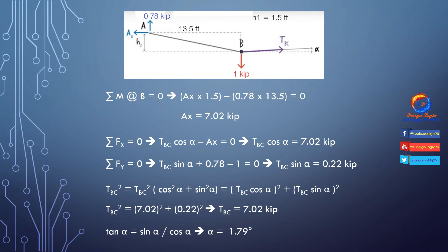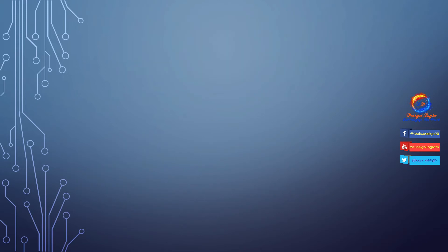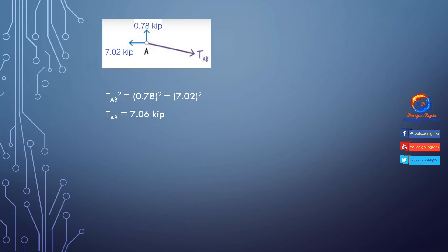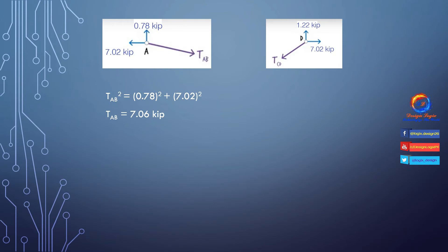We will use this angle in the SAP 2000 model as we need to give all set dimensions. Now taking joint D, we have the unknown force TCD due to cable CD. Using the Pythagorean theorem: TCD² = 1.22² + 7.02². Solving gives TCD = TAB = 7.125 kips.